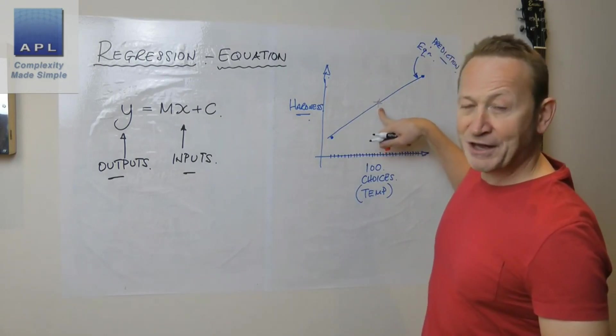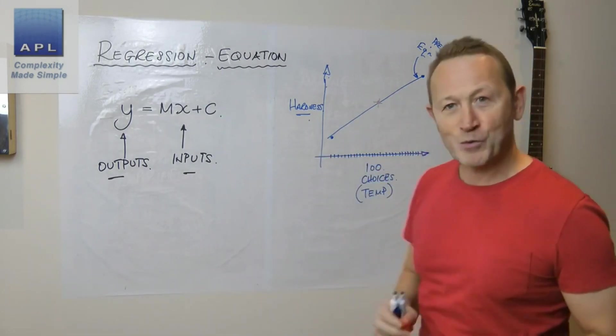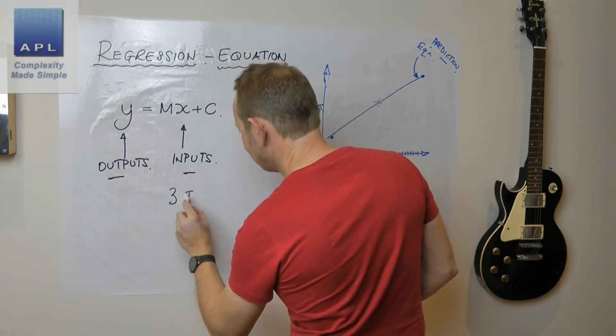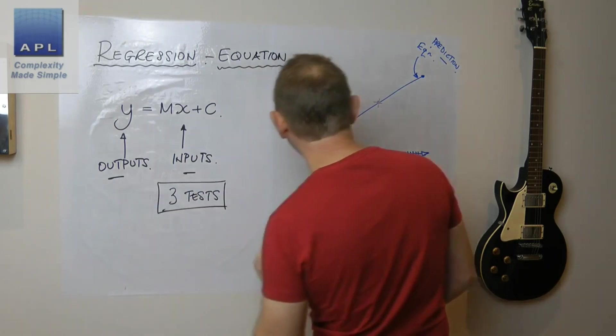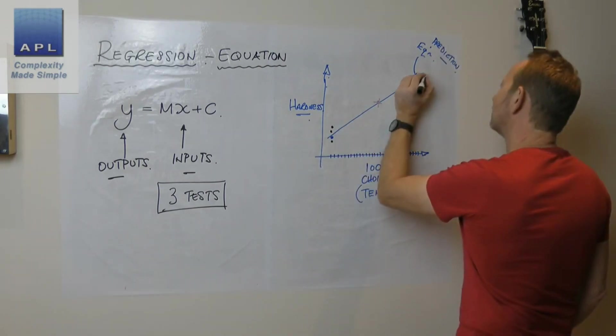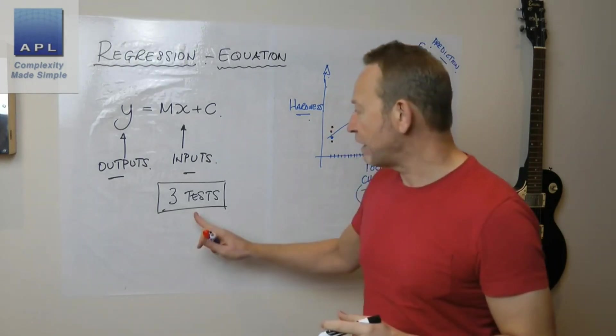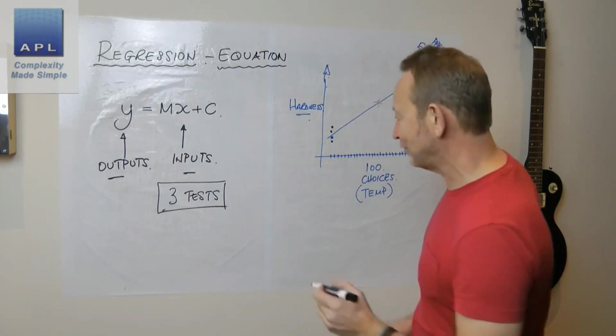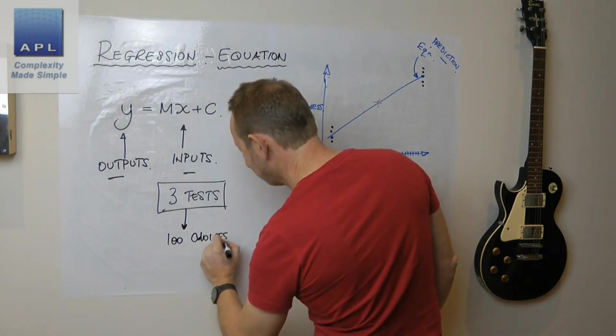If this thing is a straight line, which is what y equals mx plus c represents, if you pass through that red dot there, then clearly the equation is in play. Now look what we've done: we've just done three tests. That's all we've done potentially. In reality, you might have collected a little subgroup at the high and the low point, but for a very small number of test points I can now predict 100 choices.